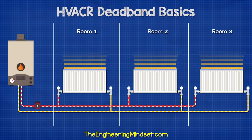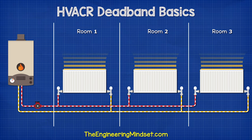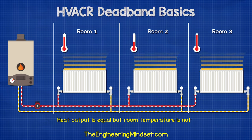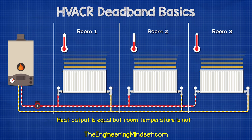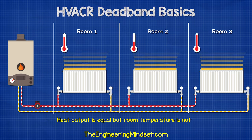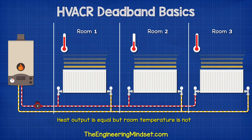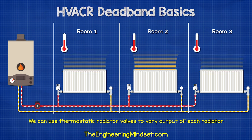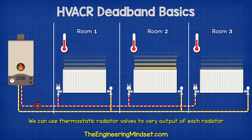Most systems have a single heating or cooling source with multiple radiators or fan coil units connected to it. These are usually in different rooms, so we need to control the output of the individual units. The simplest method to achieve this is the thermostatic radiator valve, which is a valve found on heated water systems.